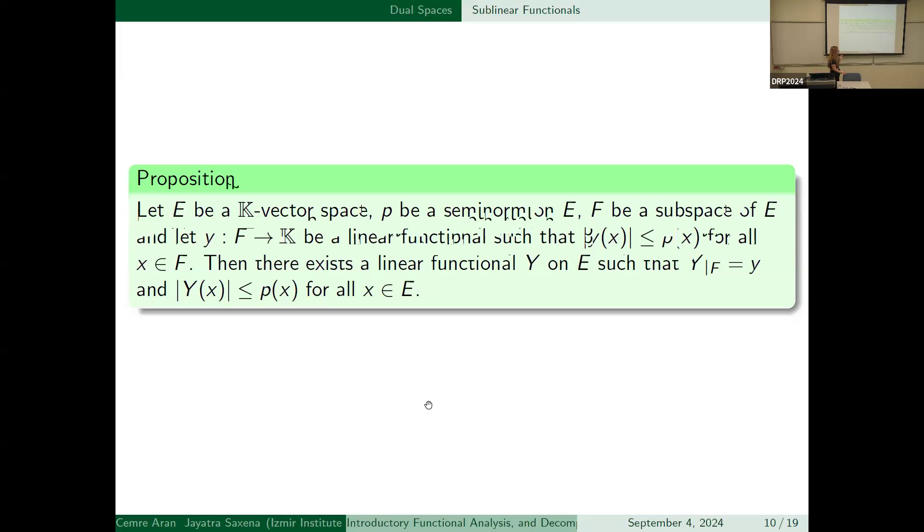Then there is some proposition to understand Hahn-Banach theorem, and it helps to build the Hahn-Banach theorem. If these are satisfied, then like p be a seminorm, F be a subspace of E, and y from F to K be a linear functional such that absolute value of y(x) less than or equal to p(x). Then there must exist a linear functional Y on E such that Y restricted to F is equal to y, and absolute value of Y(x) is less than or equal to p(x).